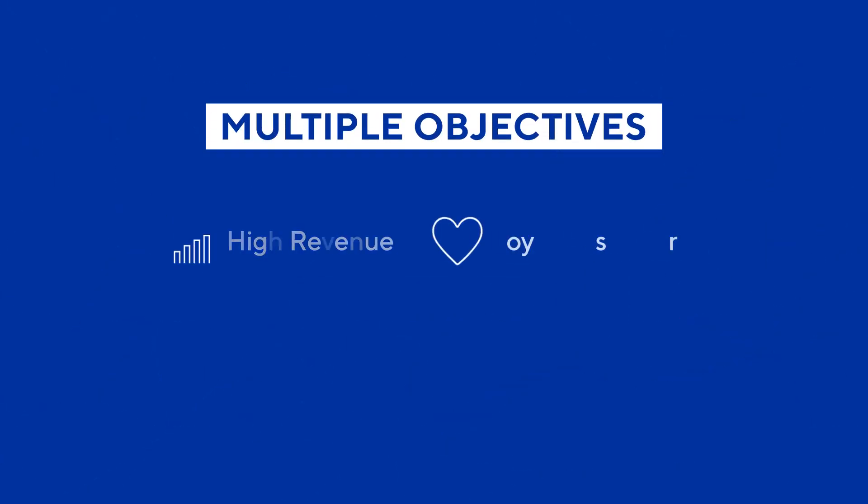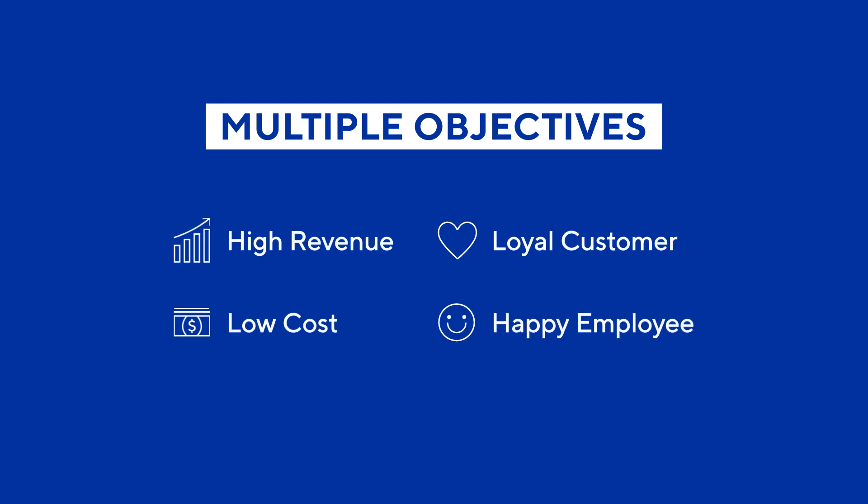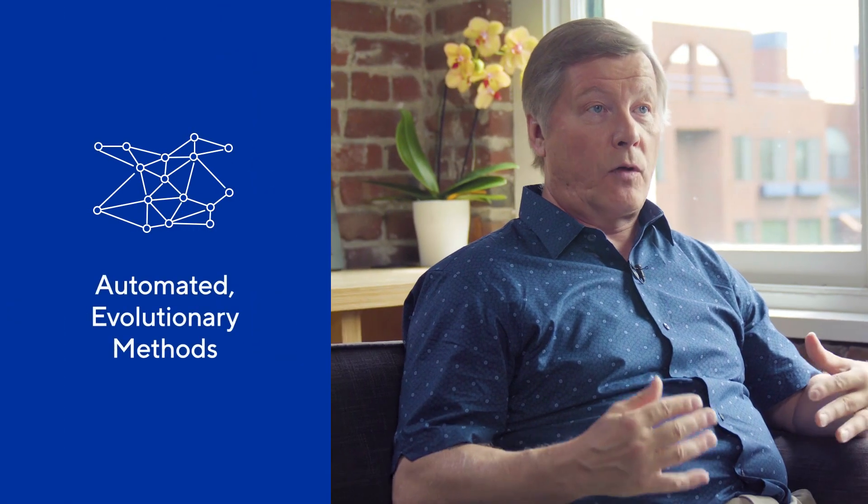Decision-making in businesses is almost always multi-objective, but humans are not very good at multi-objective decision-making. Human decision-makers have a lot of knowledge in their head, but they also have biases, and they are limited in the number and kinds of variables they can consider. With these automated evolutionary methods, we can expand the number of variables. Evolutionary AI allows us to come up with multiple decision strategies — a good starting point to optimize towards multiple outcomes.